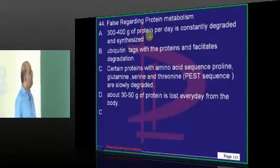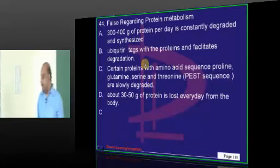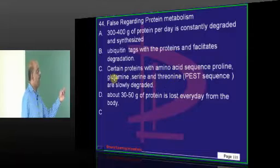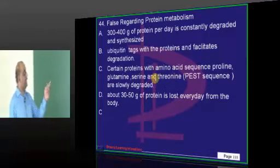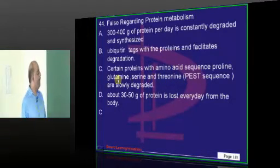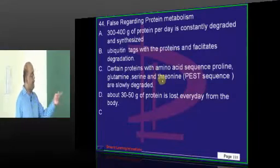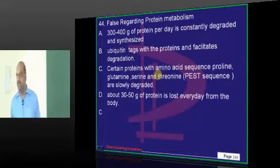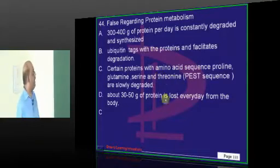Now coming to protein metabolism. One of the importance of PEST sequence - proline, glutamine, serine, threonine sequence. Any protein which has got this PEST sequence typically becomes more rapidly degraded, not slowly degraded.